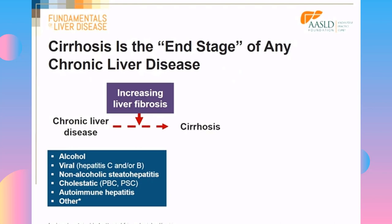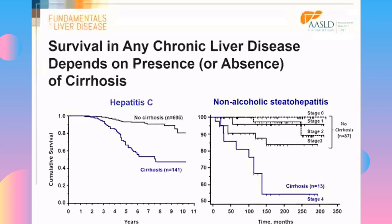Once the patient has cirrhosis, they are obviously at a higher risk of death. Survival of any chronic liver disease depends entirely on the presence or absence of cirrhosis. In the left panel, you can see that in hepatitis C, if the patient does not have cirrhosis, the survival is pretty good, but the survival is much worse in patients who have already developed cirrhosis. In the right panel, you can see the same thing for non-alcoholic steatohepatitis.